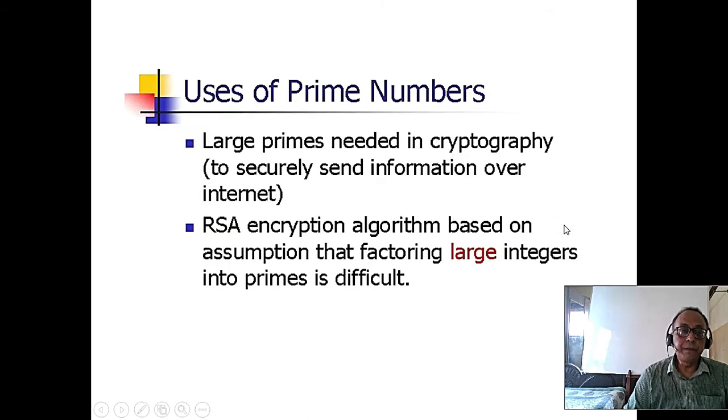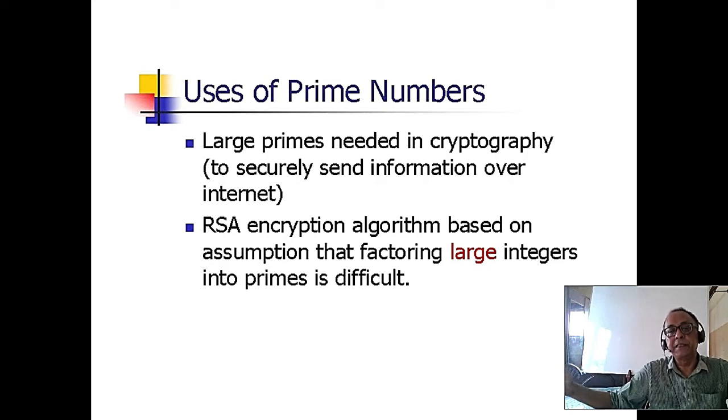Large prime numbers are used in cryptography. RSA refers to three scientists' names. This is the basic bedrock of the algorithm. Two big prime numbers' product is used, and it is assumed that getting factorization of a big prime number is pretty difficult.